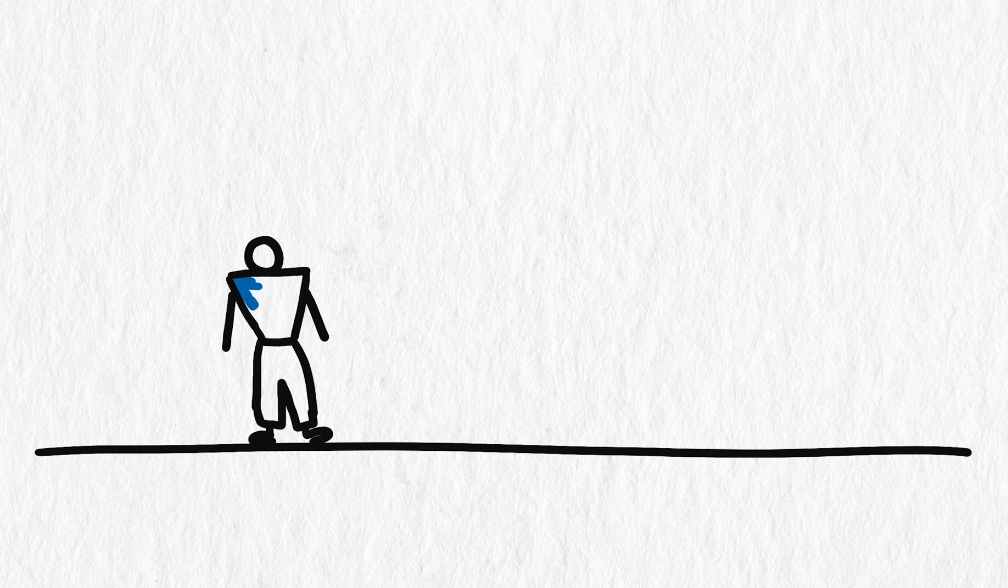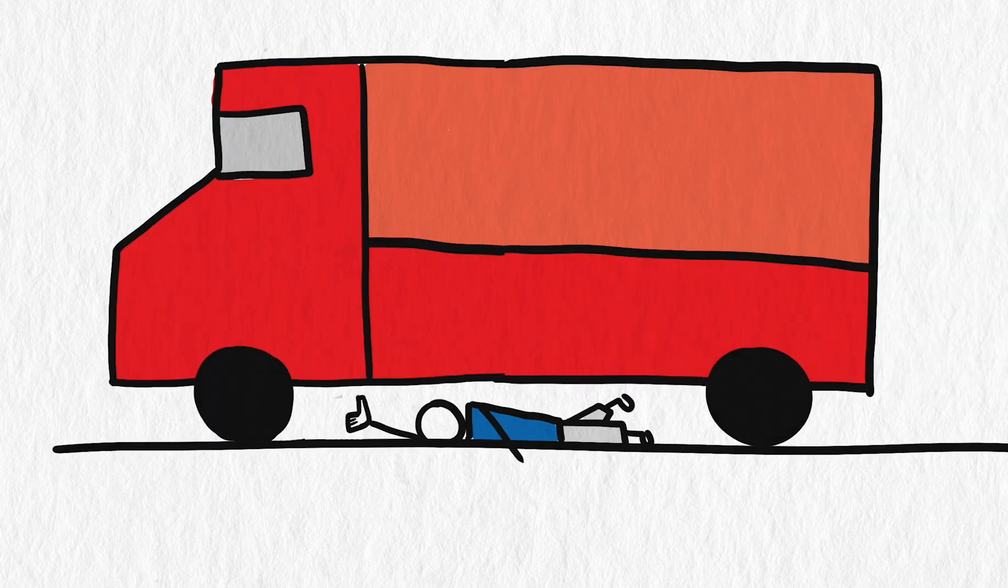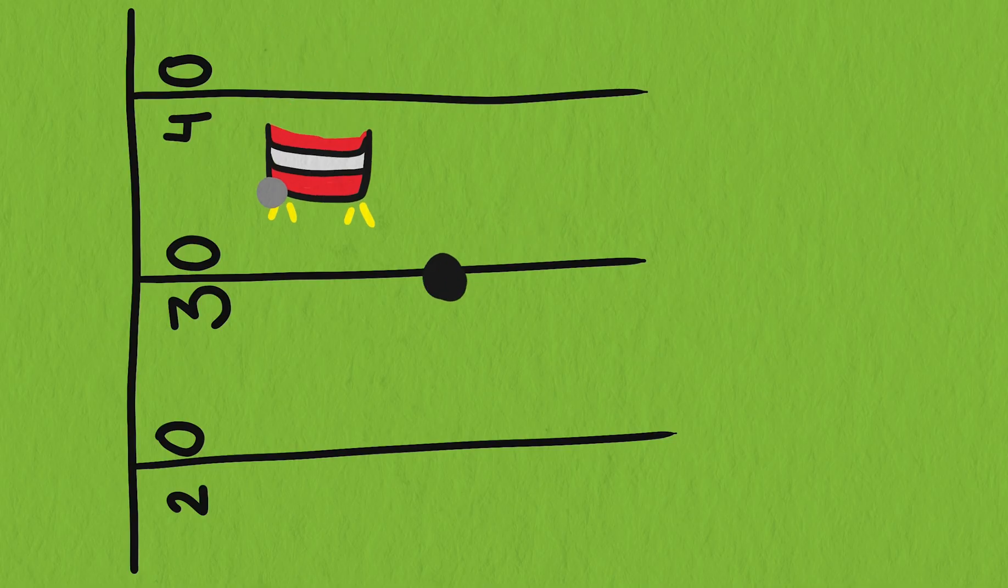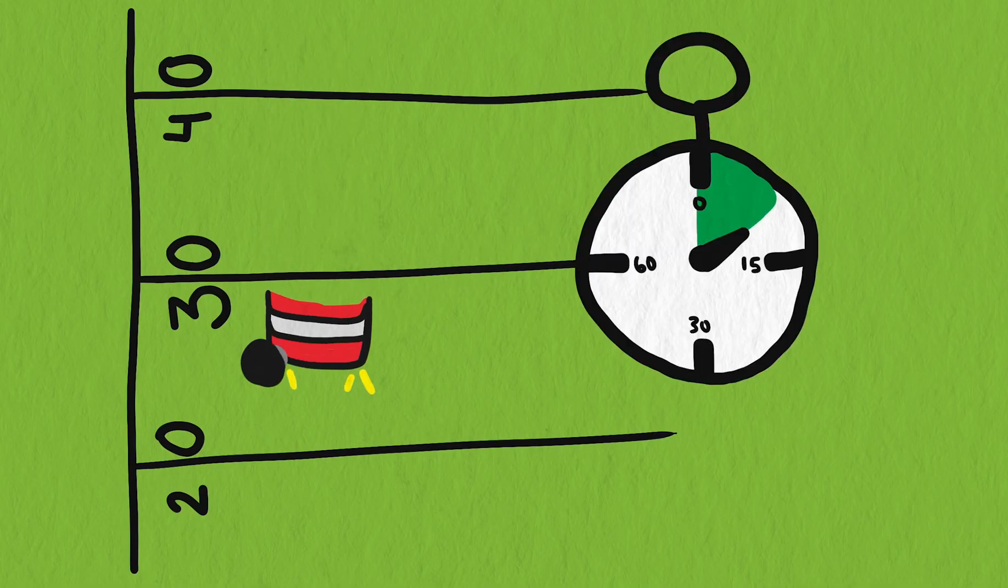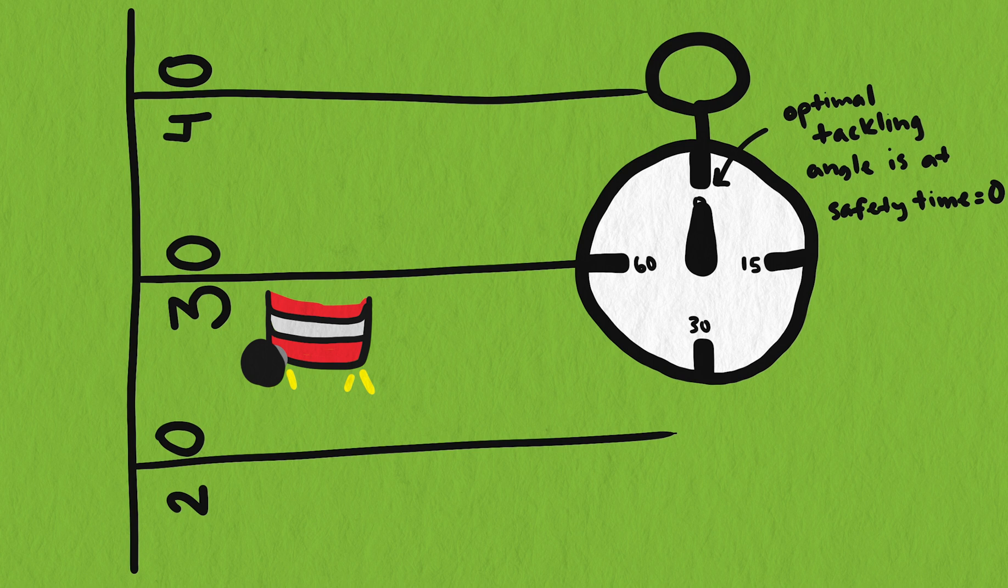This brings up the other way that the defensive back situation is different. The defensive back is trying to get hit by the truck, just the far corner of the truck. So the defensive back is not trying to maximize the time. They're trying to take an angle where the safety time is essentially zero. This will call for a different analysis of our model, which we'll do in a later video linked below.